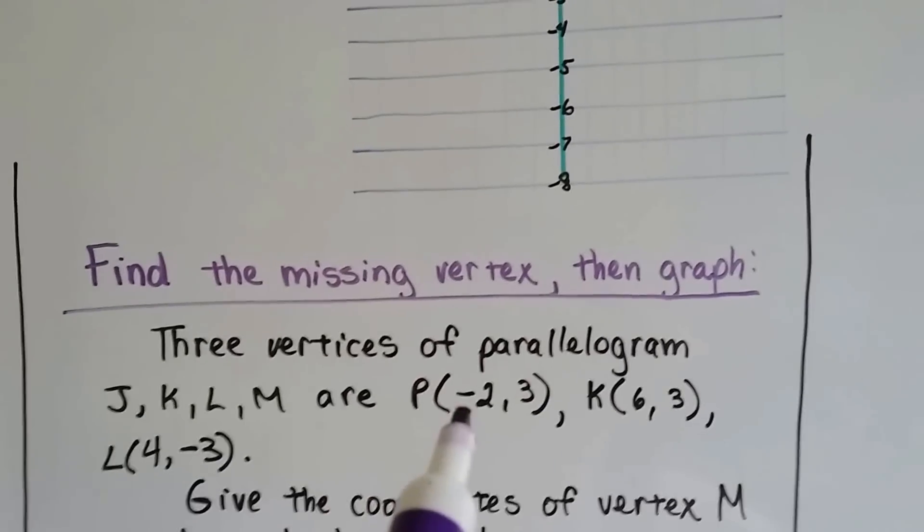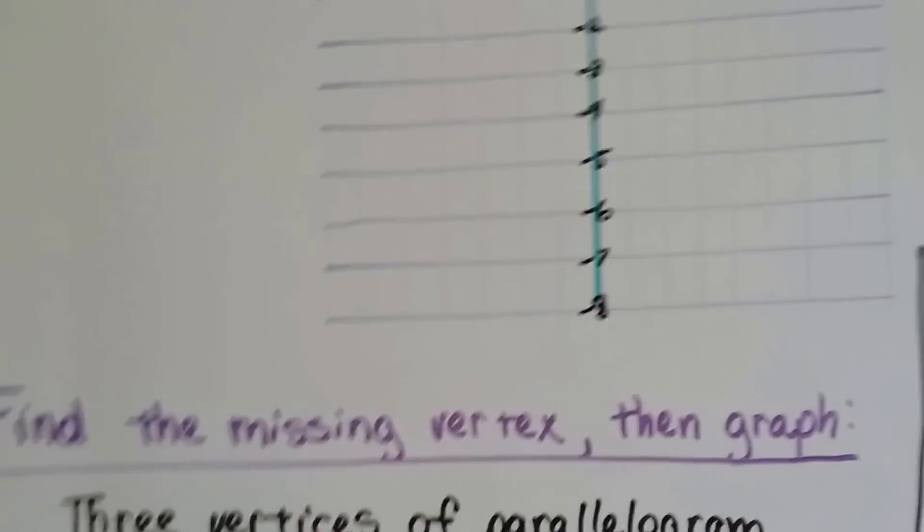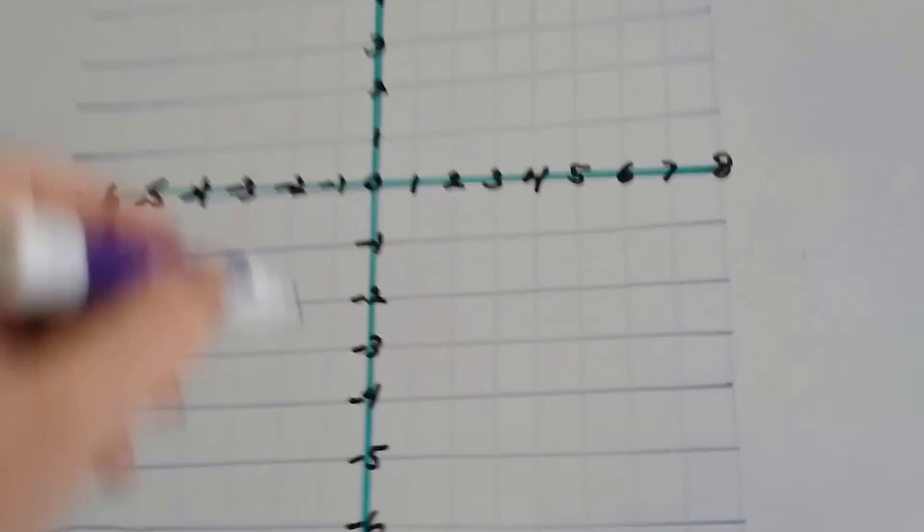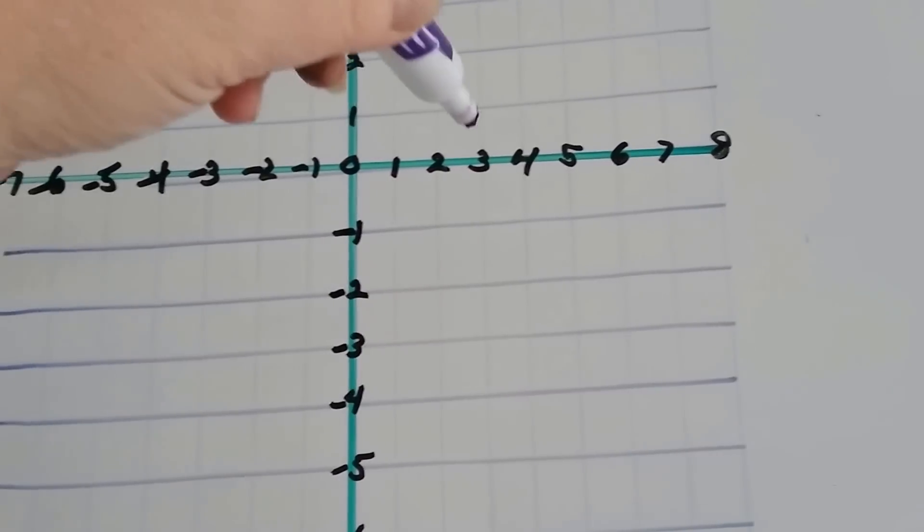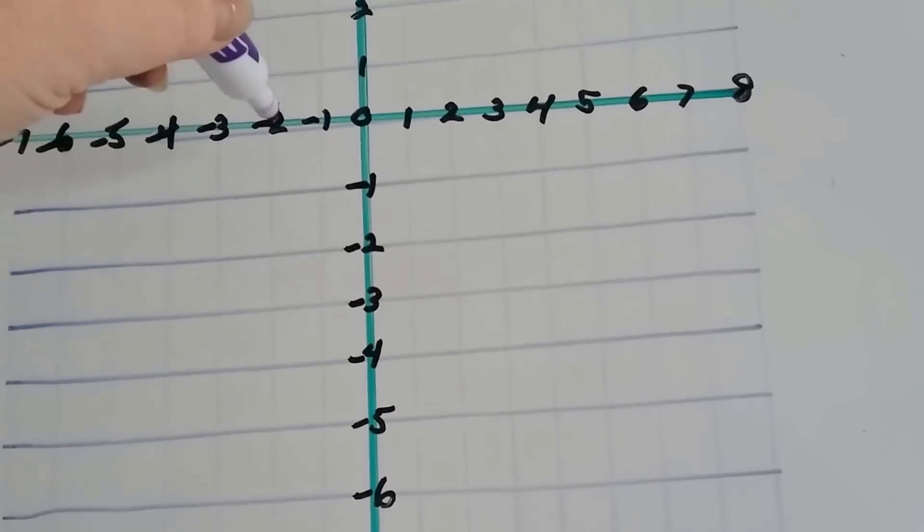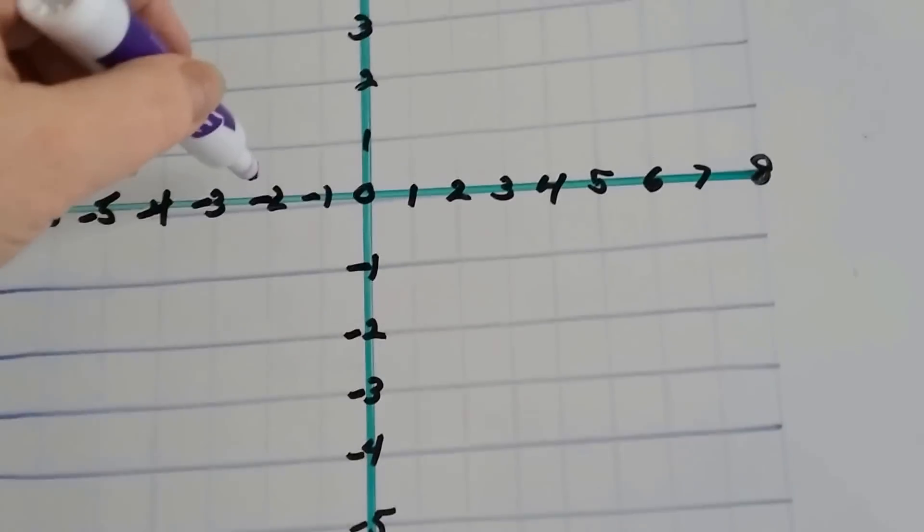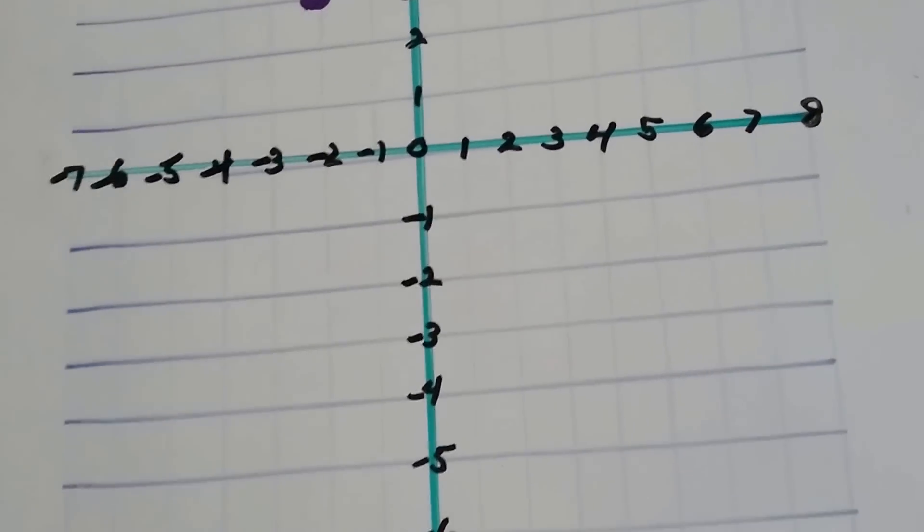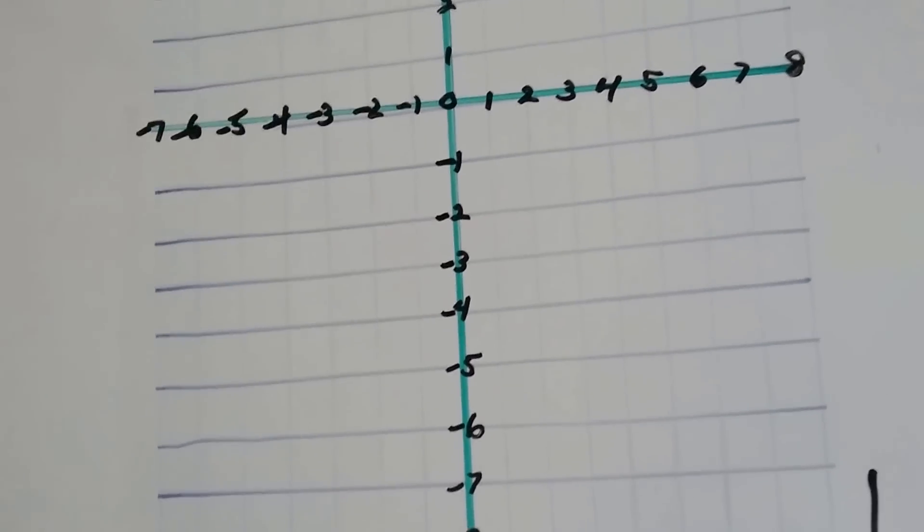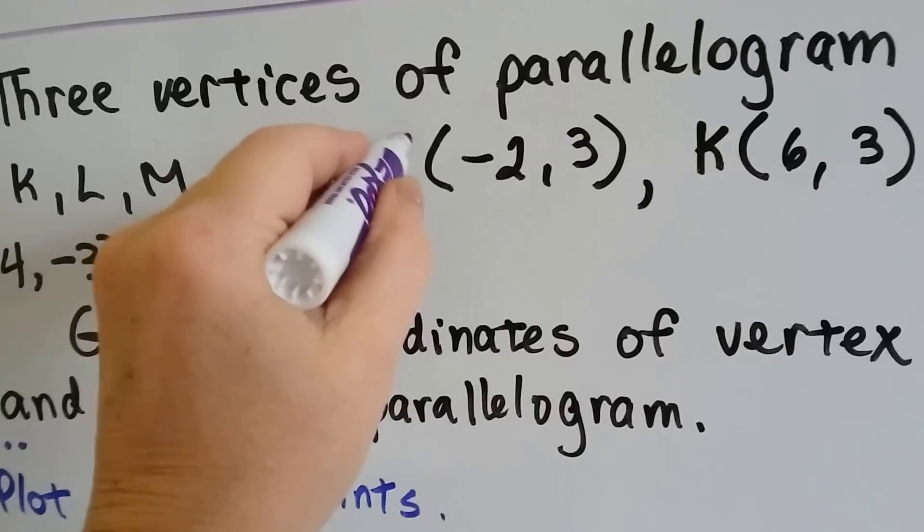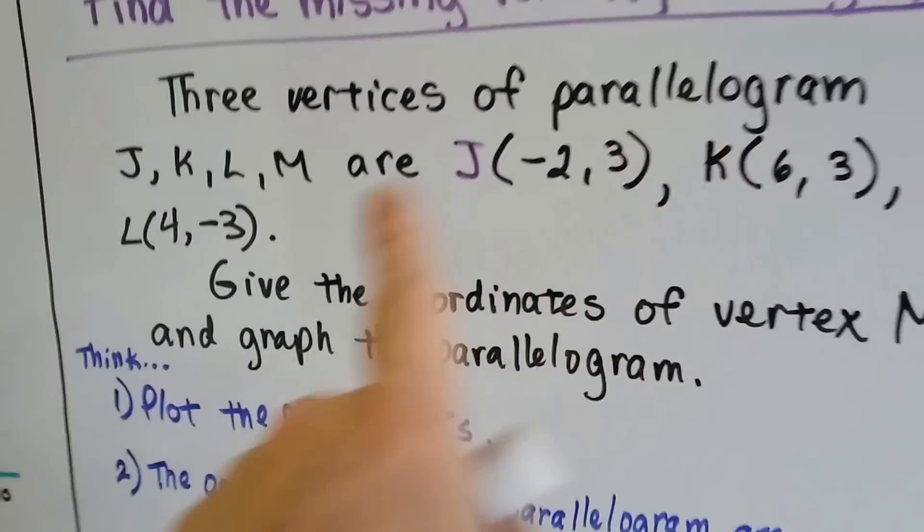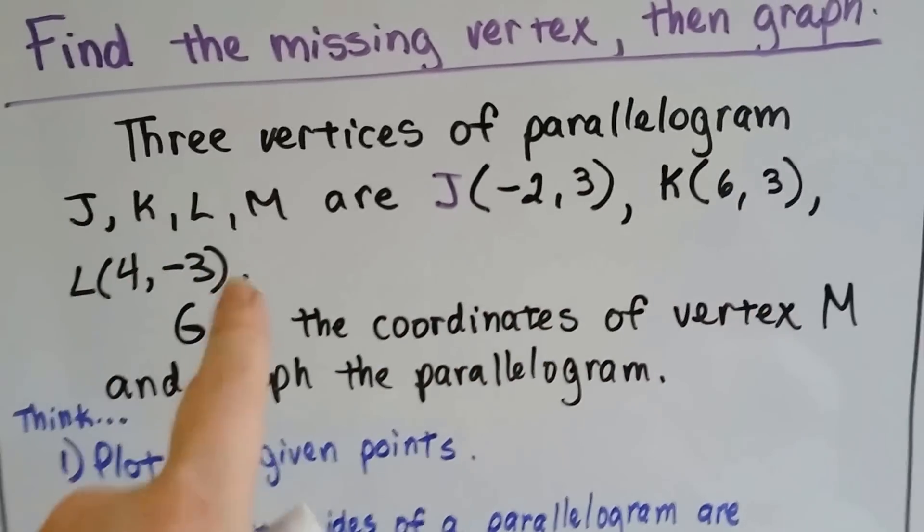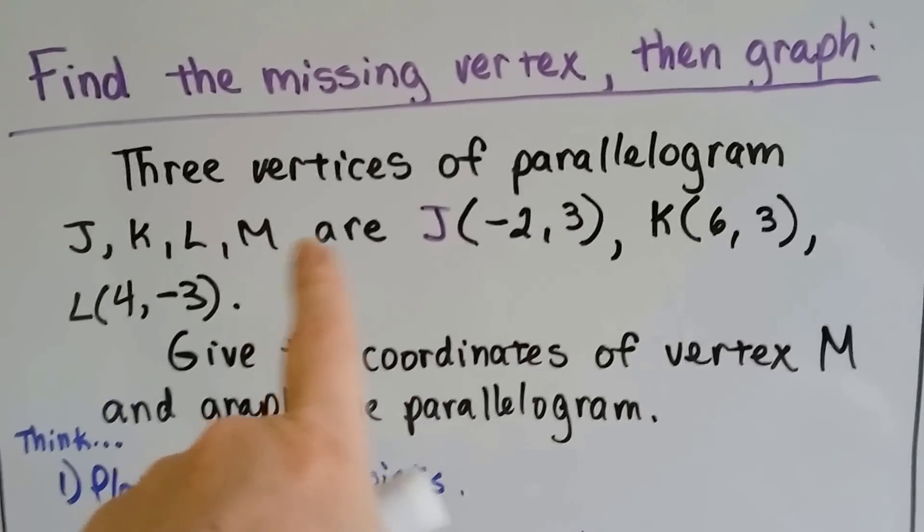So, J is negative 2, 3, and x is first. So, we need x is negative 2, that's going to be over here. And then y is 3. So, now, we're right here. And that's supposed to not be P. That's supposed to be a J. Because we're doing JKLM.